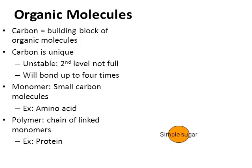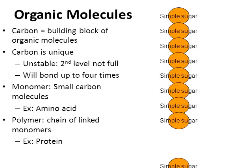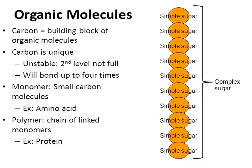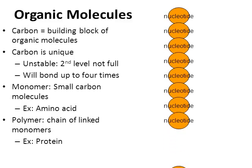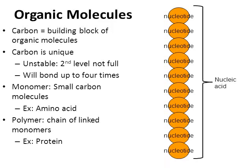Here's another example: a bunch of simple sugars are monomers, and when linked together they make up a larger structure called a complex sugar. Simple sugars and complex sugars are carbohydrates. Also, a bunch of nucleotides bonded together make something called a nucleic acid — a polymer made up of monomers called nucleotides. DNA and RNA are nucleic acids made from nucleotides.